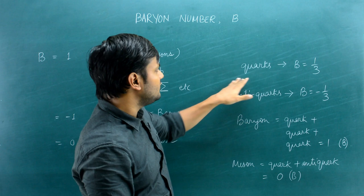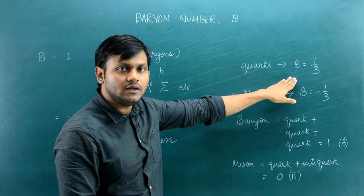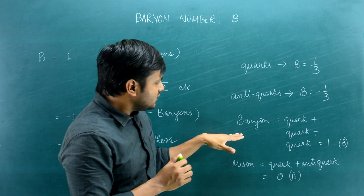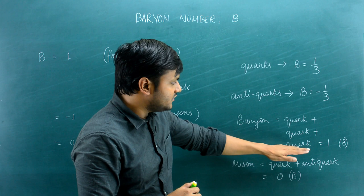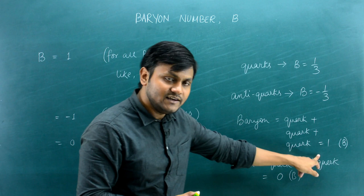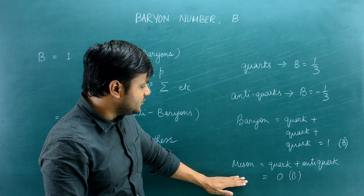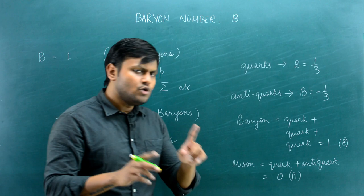The baryon number of +1 comes from the quarks: each quark has a baryon number of +1/3 while each anti-quark has −1/3. Since baryons are made of three quarks, 1/3 + 1/3 + 1/3 = 1. Mesons, made of a quark–anti-quark pair, have baryon number 1/3 − 1/3 = 0.